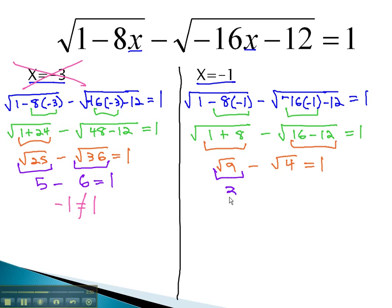The square root of 9 is 3, and the square root of 4 is 2. And sure enough, when we subtract those, we get 1 equals 1. This is a true equation, and so the only answer that works in this problem is x equals negative 1.